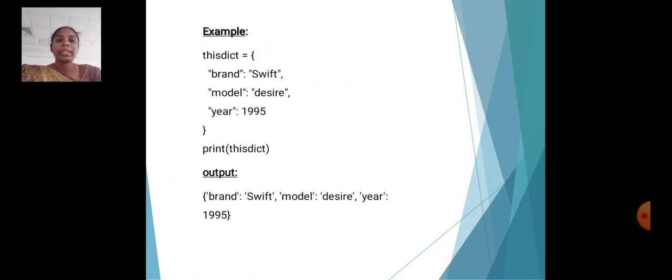Example: this_dictionary = {'brand': 'Swift', 'model': 'Desire', 'year': 1995}. Print this_dictionary: brand Swift, model Desire, year 1995.